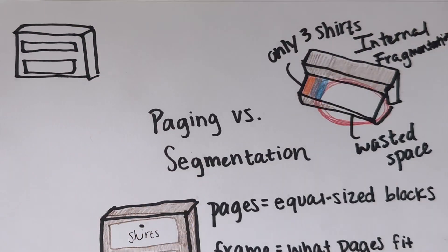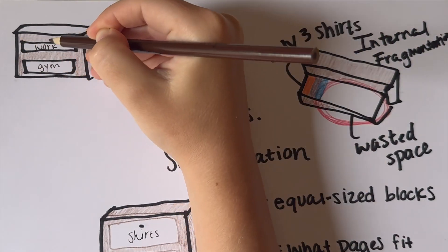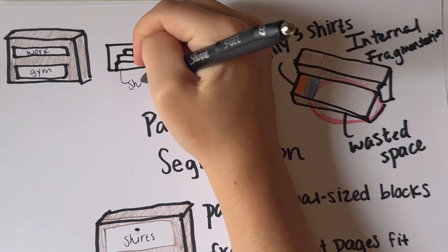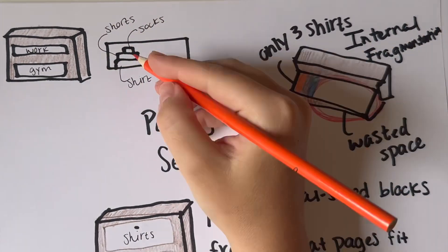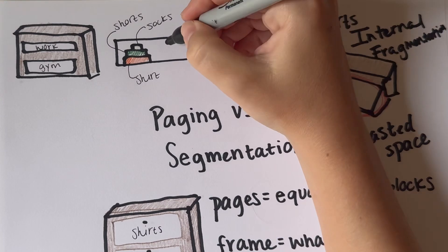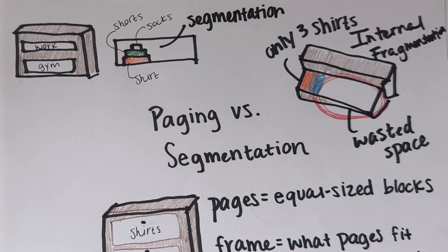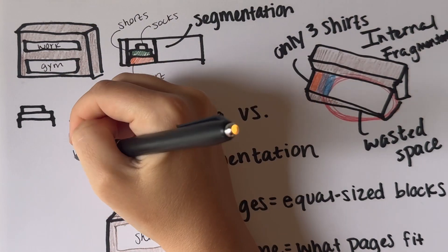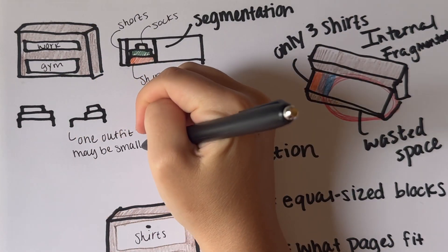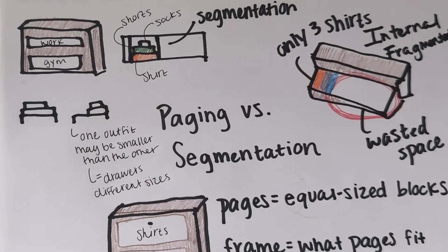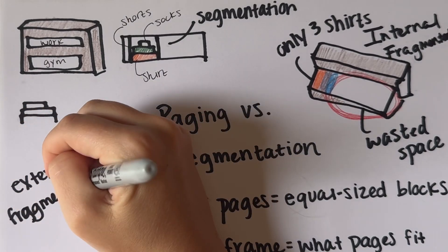Now picture organizing by outfit: one drawer for the work look, one for gym clothes. That's segmentation. Memory is split into variable-sized chunks based on what the program actually needs. No wasted space inside each chunk, but you might end up with gaps between segments. That's called external fragmentation.